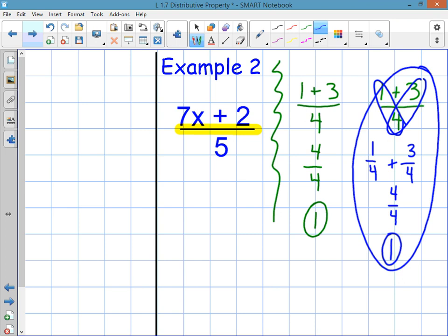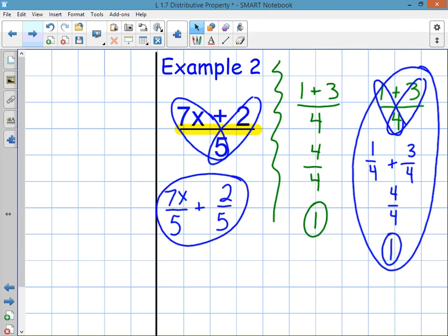So in this example, example 2, 7x plus 2 over 5, all I'm really asking you to do is separate the top two terms and write them each over the same bottom denominator. So the answer is 7x over 5 plus 2 over 5. And that's it. Now remember if you get confused you can back it up. And also if you get confused on a problem and you've watched it again and you're still confused, put a little mark in your notes and then when you come to class tomorrow you can ask me questions on that.